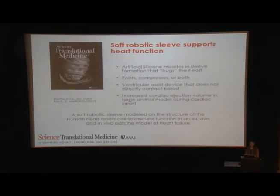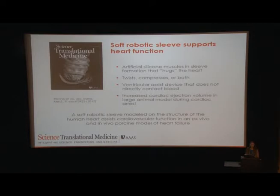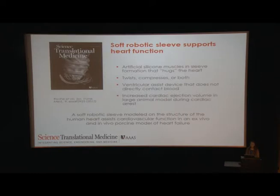The last example was a really cool paper that made for a fun cover with additional video support online. In this paper, they developed pneumatic muscles that worked like a ventricular assist device without directly interrupting blood flow. This soft robotic sleeve acts around the heart to hug it and twist and compress, providing assistance in that manner. This was tested ex vivo in pig hearts as well as an acute in vivo pig model. What we liked was the demonstration in the large animal model, which has very close size to human parameters, suggesting that this therapy could be easily translated to be applied to humans.